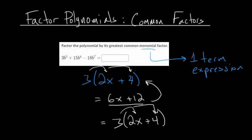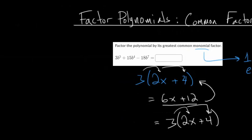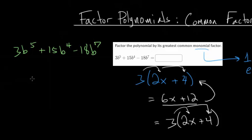Let's do this problem. We have 3b⁵ + 15b⁴ - 18b⁷. For this one, I'd recommend starting with the numbers first. Looking at the coefficients — 3, 15, and -18 — what is the biggest number that can divide into all three? If you divide them each by 3, you'll still be left with whole numbers, so we can factor out a 3.